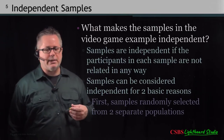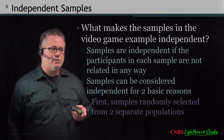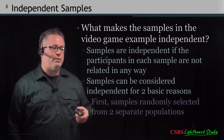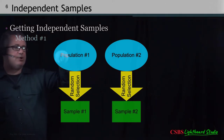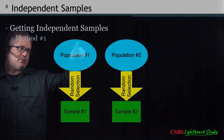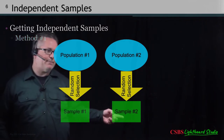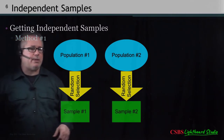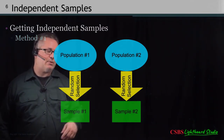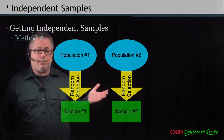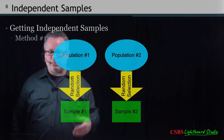Samples are independent if participants in each sample are not related in any way. There are two basic reasons samples can be considered independent. First, they can simply be from two different populations — for example, a random sample of US citizens and French citizens, which don't overlap, so they're independent. This could also apply to subpopulations like US men and US women, where random selection makes overlap very unlikely.